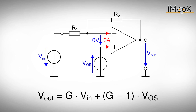Using the gain G of our inverting amplifier, we can rewrite the output voltage. For the given example, this means the higher we choose our gain, the more problematic the offset voltage will become. However, since we are now able to analyze the impact of the offset voltage on our circuit, we can pick a suitable operational amplifier with a low offset voltage. To do so, we set a limit to the offset voltage and only select operational amplifiers whose offset voltage will not exceed this limit.